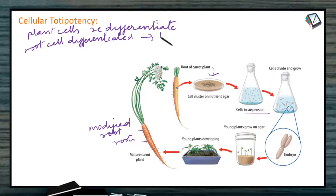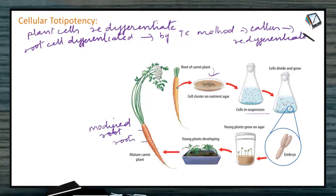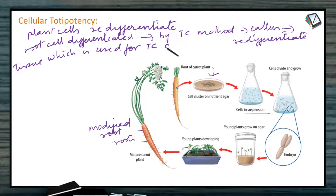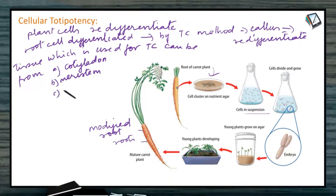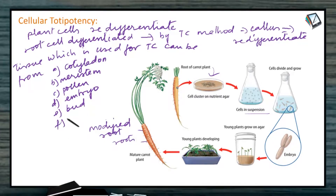By using this tissue culture method, we are turning back the clock. The cell becomes callus, and they are able to re-differentiate and form the entire plant. This is the advantage of the plant cell. The tissue required for culture can be from any part of the plant — it can be from a cotyledon, the meristem, shoot meristem or root meristem, or the pollen, egg cell, embryo, floral bud, or even the petiole of the leaf.